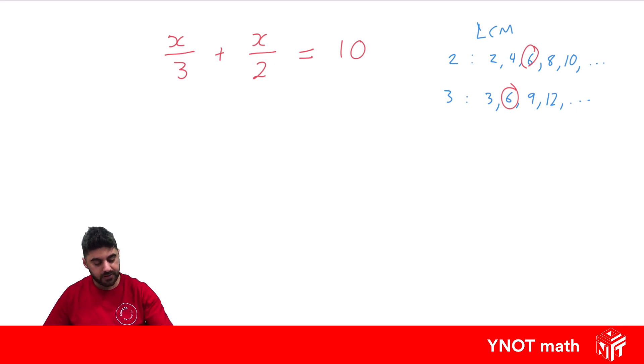So how do we make a 3 a 6? Well you just got to times it by 2. But whatever you do the denominator you do the numerator in equivalent fractions. And over here we need to make this a 6 so multiply it by 3. Whatever you do the denominator you do to the numerator. All right, equals under equals. Now 2 times x is 2x. 2 times 3 is 6 plus 3 times x is 3x over 2 times 3 is 6 equals 10.